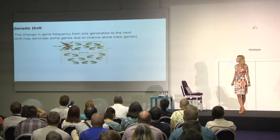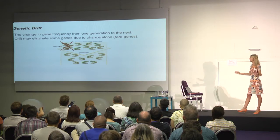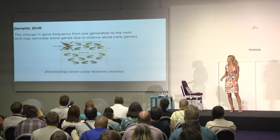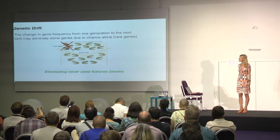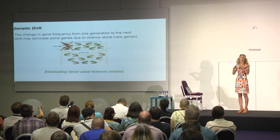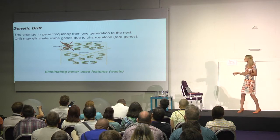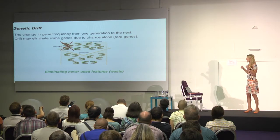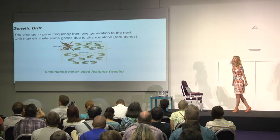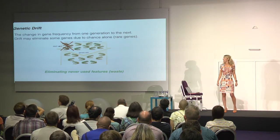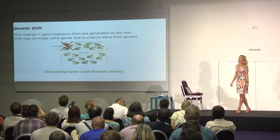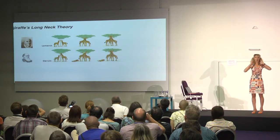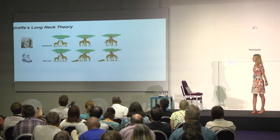Genetic drift is the change in gene frequency from one generation to the next. Drift may eliminate some genes due to chance alone — rare genes. From the frogs example, we can see that the brown frogs are going to die out. They bear rare genes and they're not going to reproduce. It's the way how mother nature eliminates never-used features, or waste. The French biologist Lamarck believed that all giraffes had short necks once upon a time.